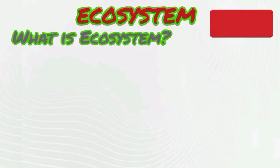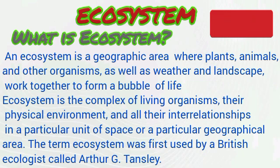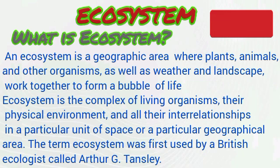An ecosystem is a geographical area or place where plants, animals, and other living organisms, as well as weather and landscape, work together to form a bubble of life. Simply put, an ecosystem is a place where plants and animals interact — among the living as well as with the non-living environment such as the air, the atmosphere, the water, and the soil — to form a bubble of life. The term ecosystem was first used by a British ecologist called Arthur G. Tansley.